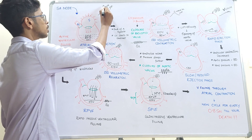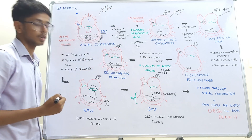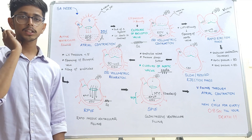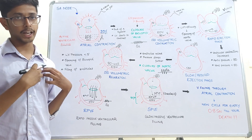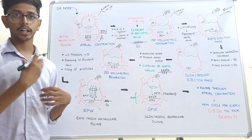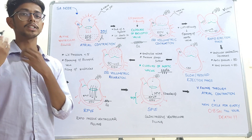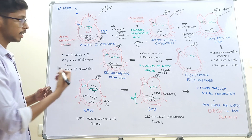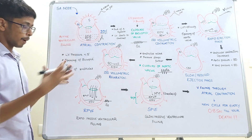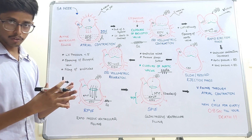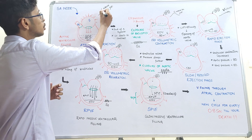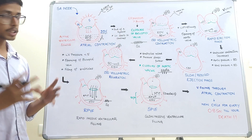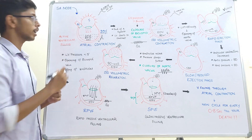Here we need to understand the concept of jugular venous pressure (JVP). JVP is the pressure in the jugular veins and is an indirect measure of the pressure in the atria. We cannot directly measure atrial pressure, so we measure JVP to identify pathologies in the atria. Due to the contraction of the atria, the pressure inside the atria rises, producing the A-wave in the JVP. The A-wave is due to the contraction of the atria during the phase of atrial contraction.